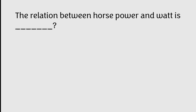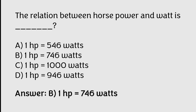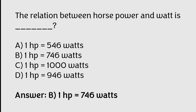The relation between Horsepower and Watt is: 1 horsepower is equal to 746 watts, 1 horsepower is equal to 1000 watts, 1 horsepower is equal to 946 watts. The correct answer is Option B. 1 horsepower is equal to 746 watts.